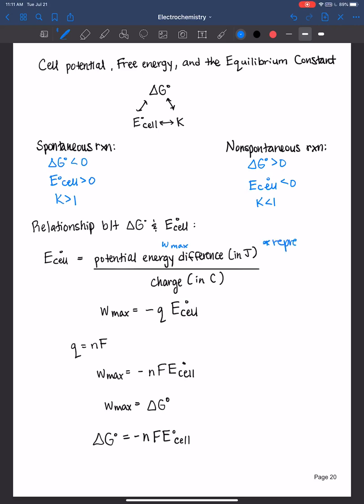This potential energy difference is the maximum work. It represents the maximum amount of work that can be done by the system on the surroundings.